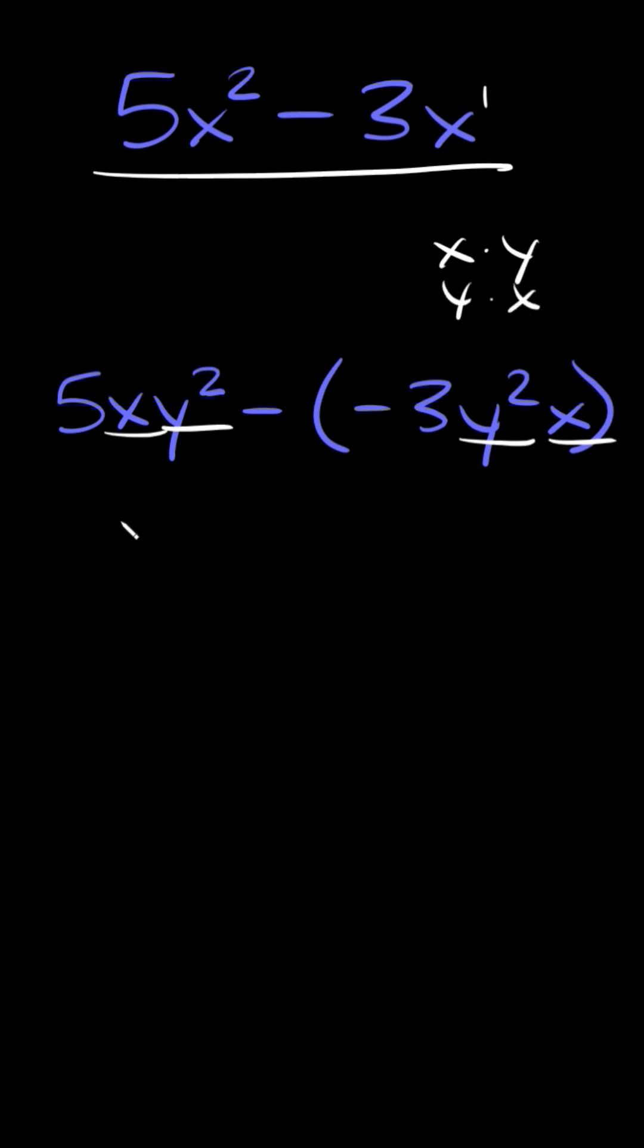So here we could write this as 5xy² minus negative 3, and then we could just flip these so they match. So we could write it as xy². Whenever you subtract a negative, that's the same thing as adding. So 5xy² plus 3xy² equals 8xy².